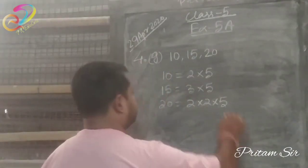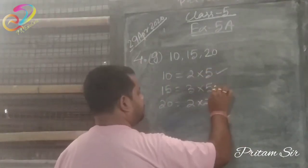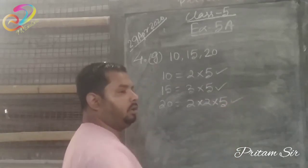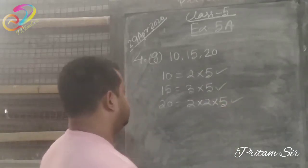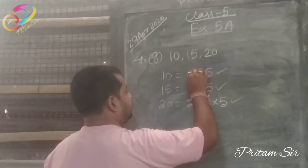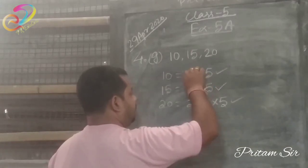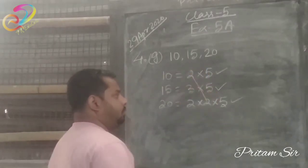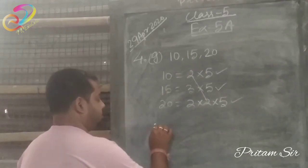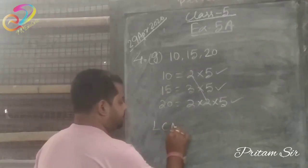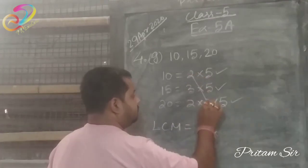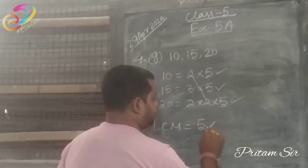Now common factors: 5 is common in all three numbers. And these two are common, these two and these two are common. So LCM is equal to 5 is common, first we write 5. This 2 is common between these two. Then 3 is remaining, three alone. Two is remaining, two alone.